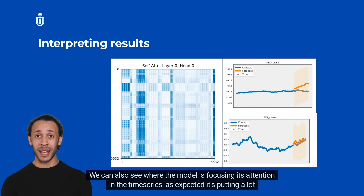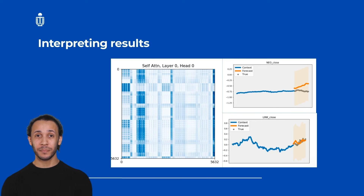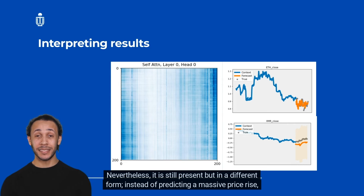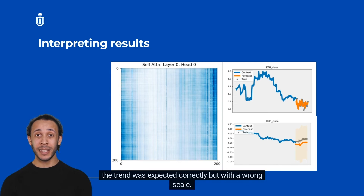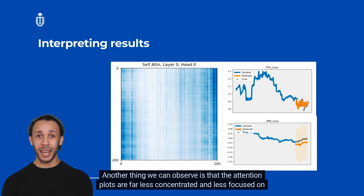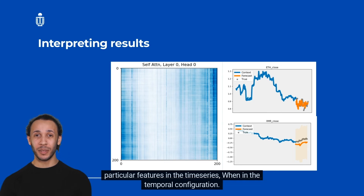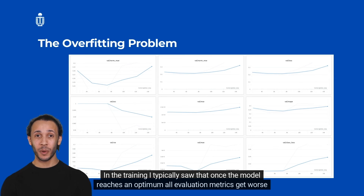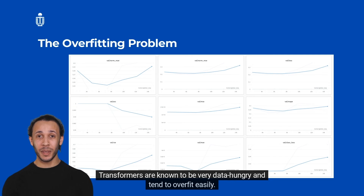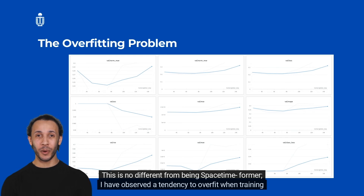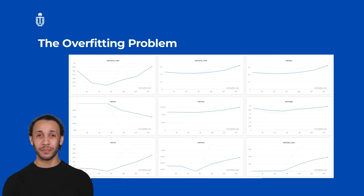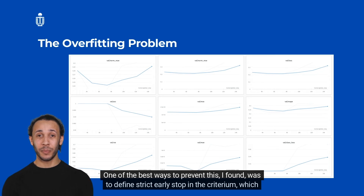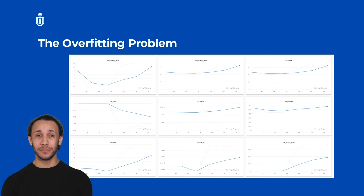We can also observe where the model focuses its attention in the time series. As expected, it places high weight on the most recent values but also focuses on some early values. The trend direction was sometimes identified correctly, but with the wrong scale. The attention plots are far less concentrated in the temporal configuration compared to the spatio-temporal one. During training, once the model reaches an optimum, all evaluation metrics tend to worsen over time due to overfitting. Transformers are known to be very data hungry, and the Spacetime Former is no exception. The best mitigation I found was defining a strict early stopping criterion.